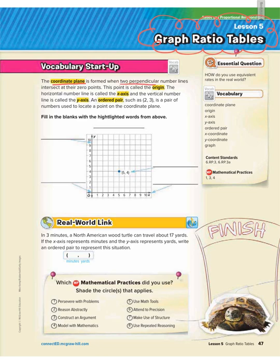A coordinate plane is when you have two perpendicular number lines that intersect at zero. The point where they intersect at zero, that's called the origin. The horizontal number line is called the x-axis and the vertical number line is called the y-axis. And then we have an ordered pair. An ordered pair such as 2 comma 3 is a pair of numbers used to locate a point on the coordinate plane.